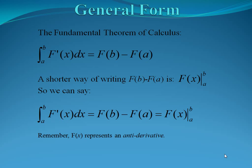Now let's remember back. The fundamental theorem of calculus says if we integrate a function from a to b, and we integrate f prime of x dx, it's going to be the original function at b minus the original function at a. A shorter way of writing this, f of b minus f of a, is to say capital F of x, evaluated from b to a. What this represents is the antiderivative, and we're looking over the bounds a to b.